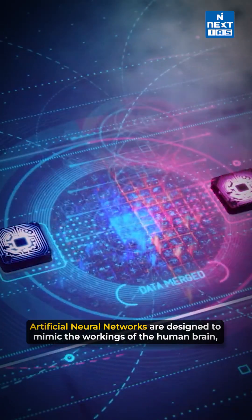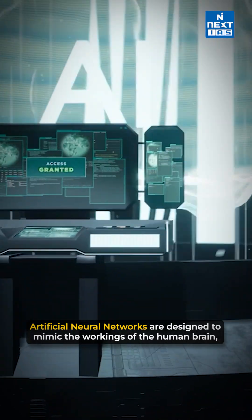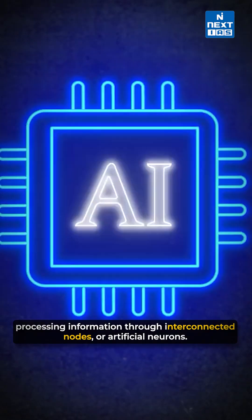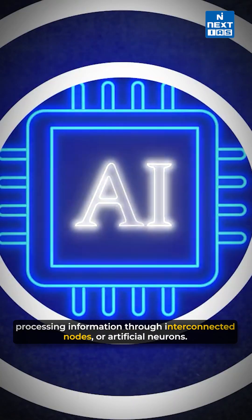Artificial neural networks are designed to mimic the workings of the human brain, processing information through interconnected nodes or artificial neurons.